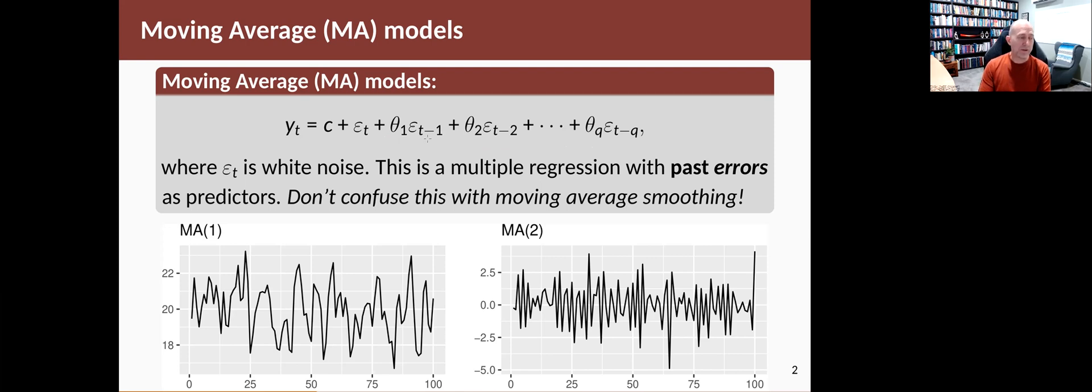We call this a moving average model because it's a little bit like a weighted moving average of the past errors. But you've got to be careful not to confuse the moving average model with moving average smoothing. When we talk about models, we're talking about these sort of things.